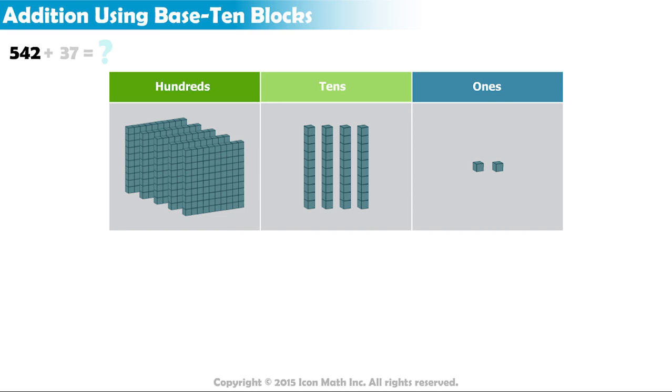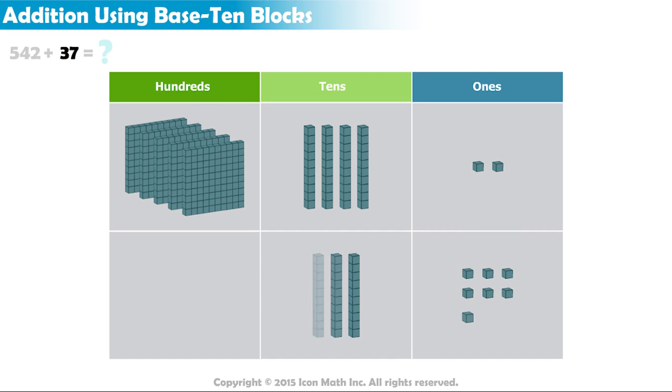Let's represent the second number, 37. We have 7 in the ones place, and 3 in the tens place. We use 7 units to represent the ones place, and 3 rods to represent the tens place.